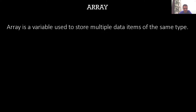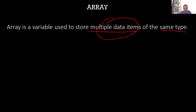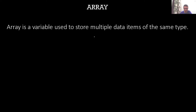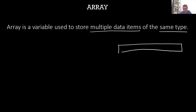An array is basically a variable that is used to store multiple data items of the same type. It can store multiple data items, but all these data items should be of the same type. We'll understand the different types of data items in the upcoming videos, but for now just remember that these data items should be of the same type. We can visualize the array as a large block of memory divided into small chunks.